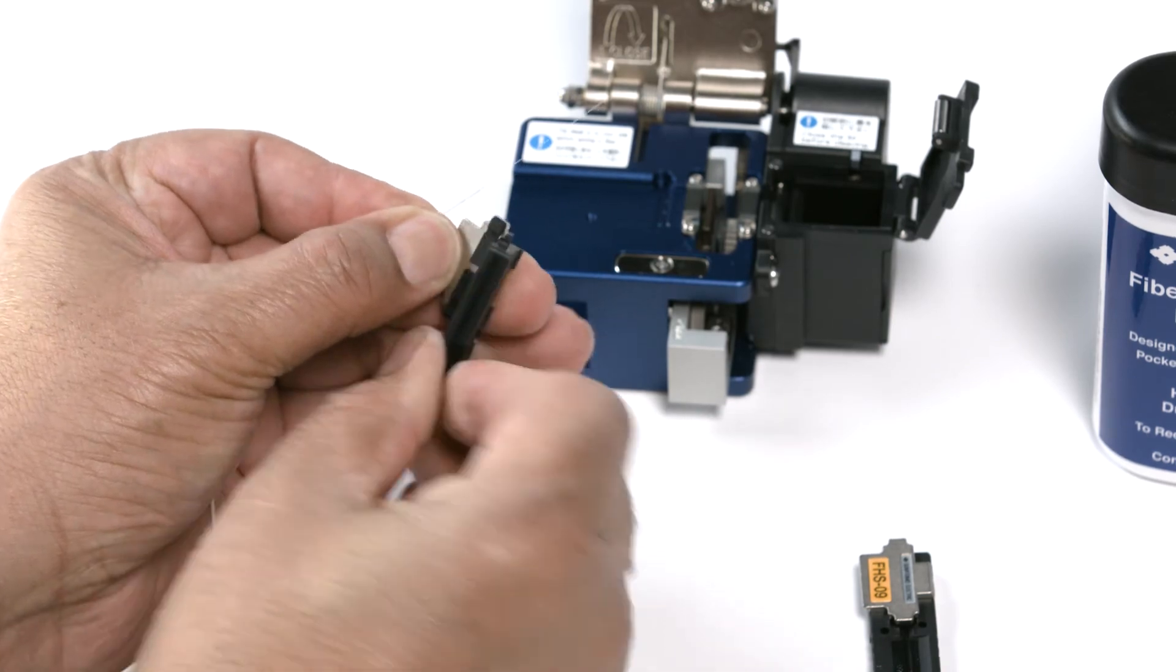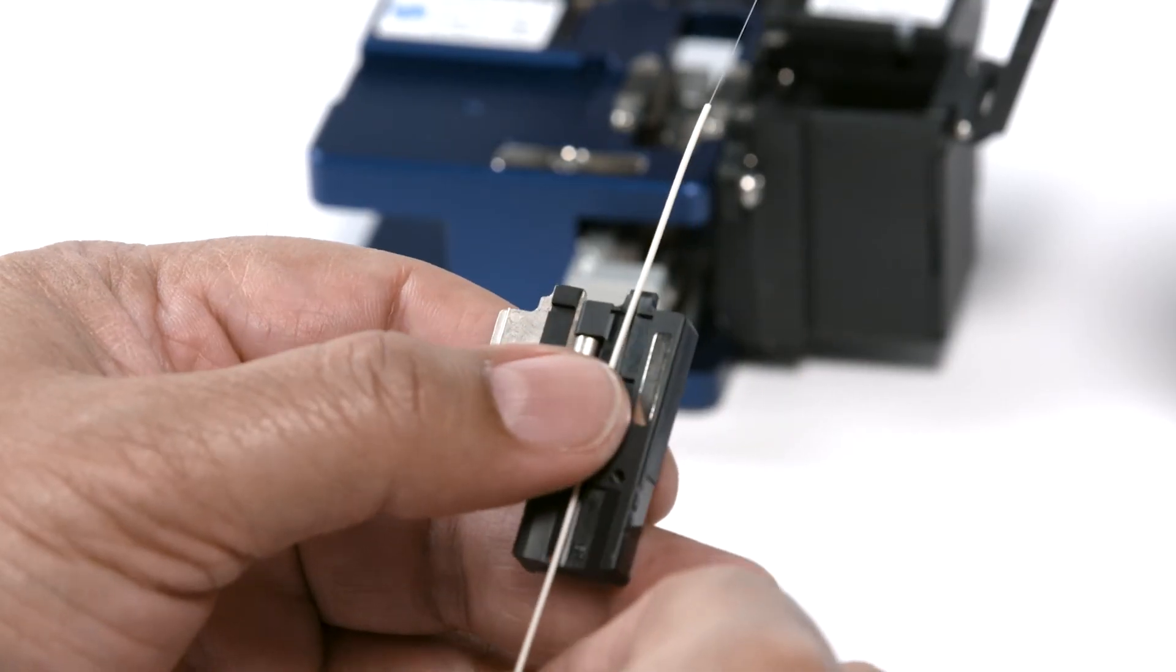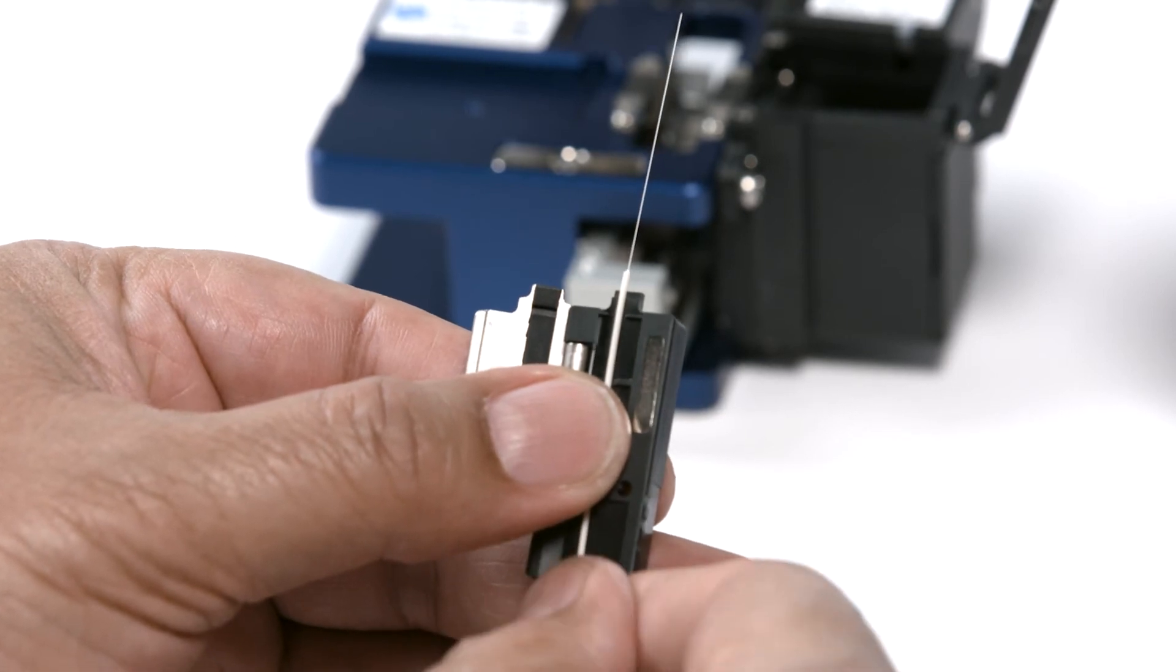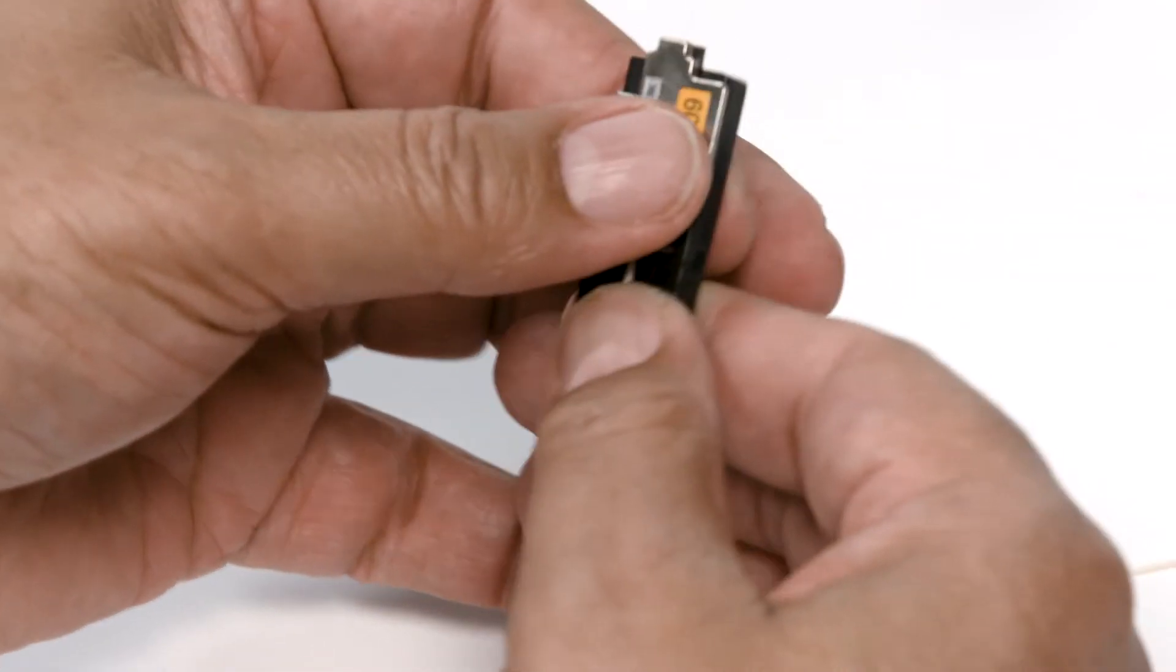Open a fiber holder. Place the stripped clean fiber into the left side fiber holder. Align the fiber into the holder, fiber buffer edge to holder edge. Close the fiber holder.